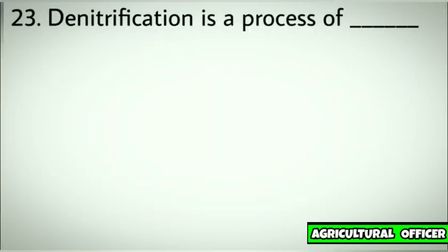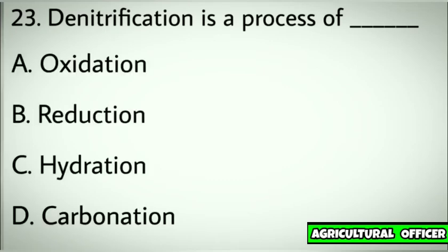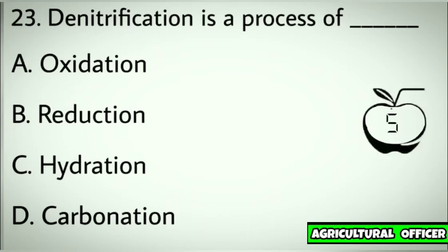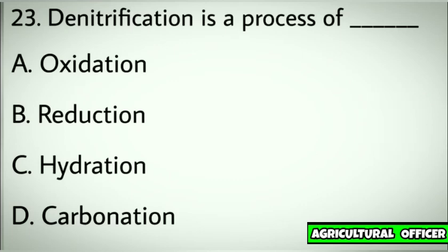Question number twenty-three. Denitrification is a process of. Options: A. Oxidation. B. Reduction. C. Hydration. D. Carbonation. Correct answer: B. Reduction.